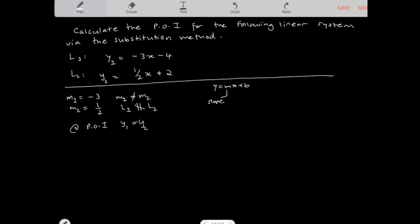And if I equate the two y values, what I'm going to see here is that negative 3x minus 4 is equal to 1 half x plus 2. Now I want to solve for that common x value.